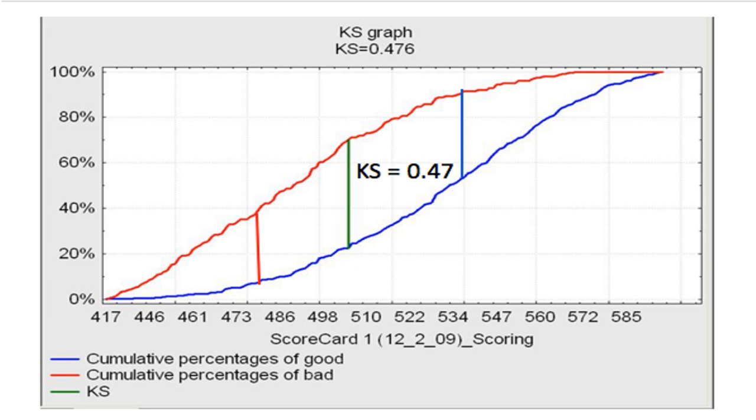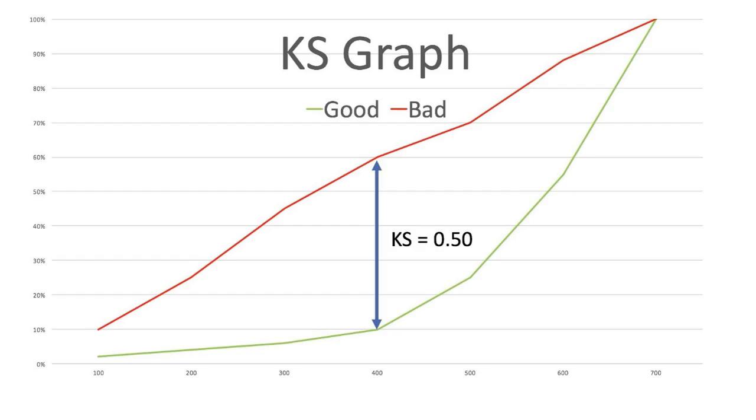It's also not easy to compare KS scores between two models as their score distributions might be different. For example, if we compare this model with this new model, we found that this new model has a higher KS value. But the score distribution is different, so it's hard to compare those two directly. That concludes our explanation of Gini Coefficient and KS Statistics.